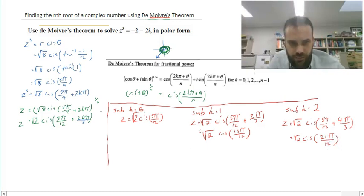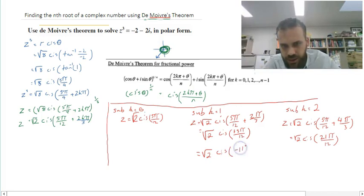All right, so I've got three answers here, and just need to go back and tidy up your answers a little bit. z equals root 2 cis, 5 pi on 12, that's no problem. Root 2 cis, 13 pi on 12, that can be rewritten as root 2 cis negative 11 pi on 12.